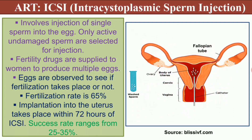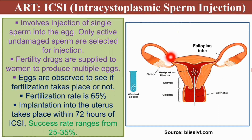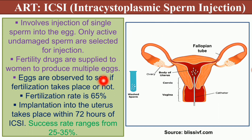The third ART method is ICSI — intracytoplasmic sperm injection — which involves the injection of a single sperm into the egg. Active and undamaged sperm are selected for injection. Fertility drugs are given to women to produce multiple eggs, and eggs are observed to confirm fertilization. The fertilization rate in ICSI is 65%, implantation in the uterus takes place within 72 hours, and the success rate ranges from 25 to 35%.